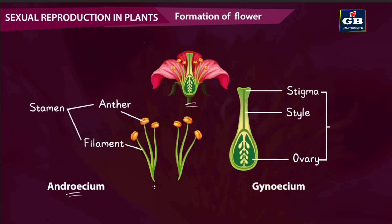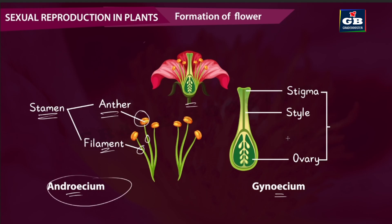Androecium is the male reproductive part of the flower and gynoecium is the female reproductive part. Androecium consists of stamens. Each stamen is made up of two parts: anther and filament. All the stamens together are called androecium. The female part, gynoecium, consists of pistils. Some flowers will have only one pistil, and some flowers will have many pistils.